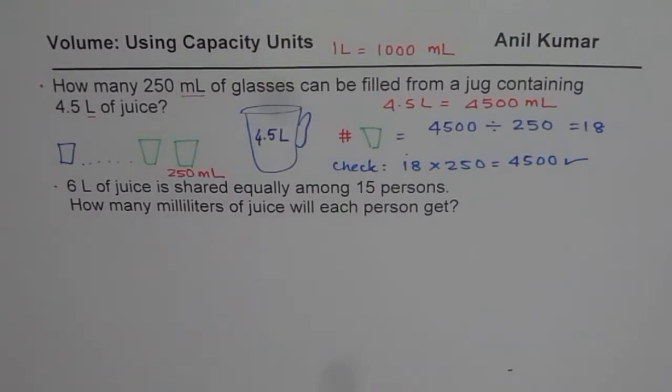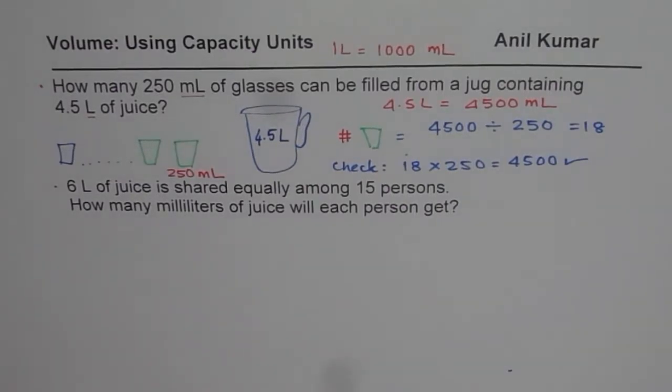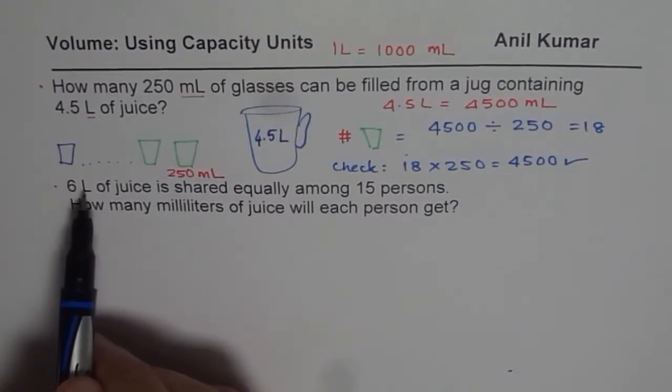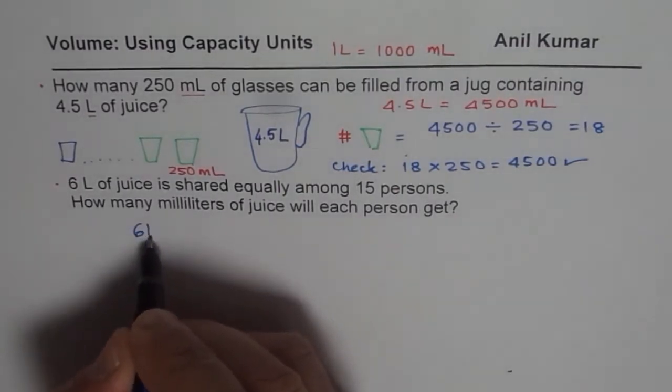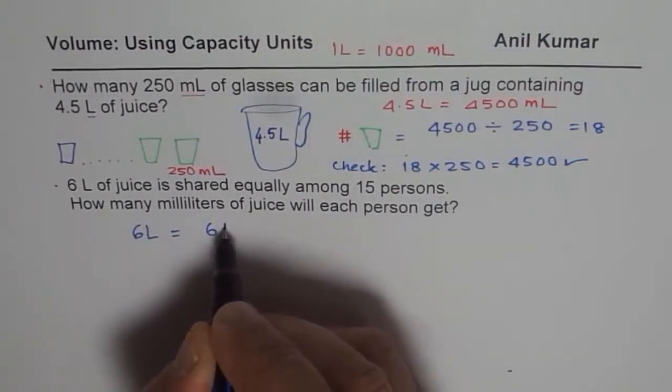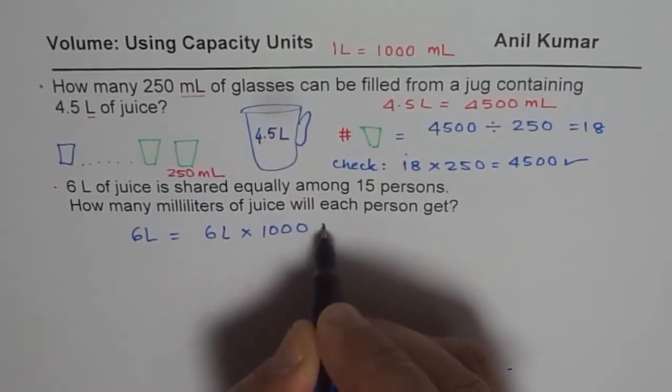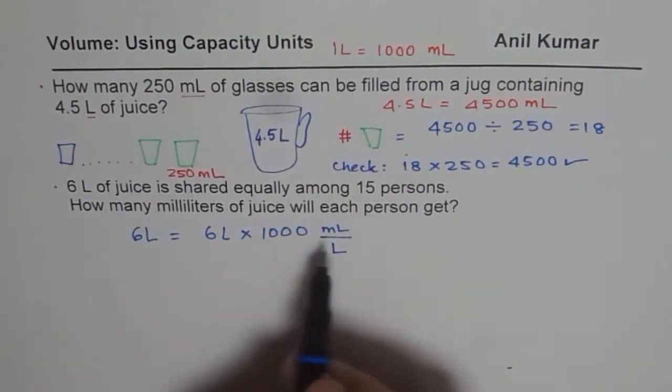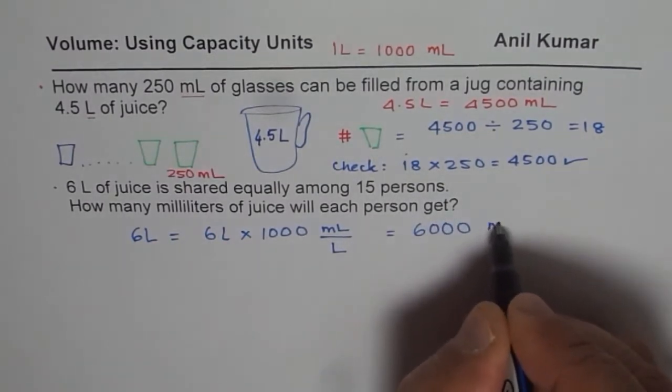Now let us do the next one. It is 6 liters of juice is shared equally among 15 persons. So how many milliliters of juice will each person get? So since it is 6 liters, we want to convert to milliliters. First step is we write 6 liters equals to 6 liters times 1,000. Since there are 1,000 milliliters in 1 liter, we multiply by 1,000. So we get 6,000 milliliters of juice.